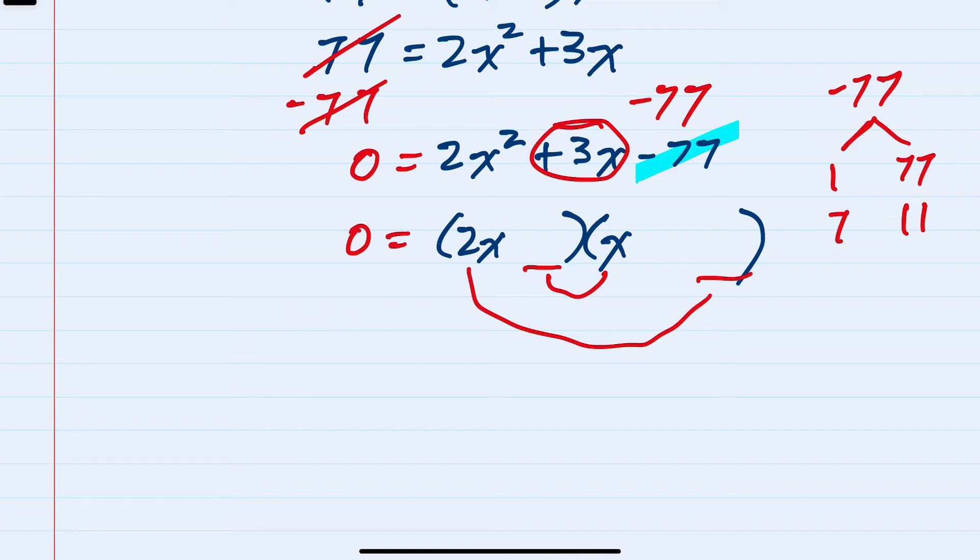And here I can see that if I use the 7, the outside would now give me a 14x, and the 11 multiplied would give me an 11x. And since I'm looking for a positive 3x, this would be positive. And I would want the 11 to be negative so that they add up to a positive 3x. And of course, the negative 11 and positive 7 multiplied to be a negative 77.